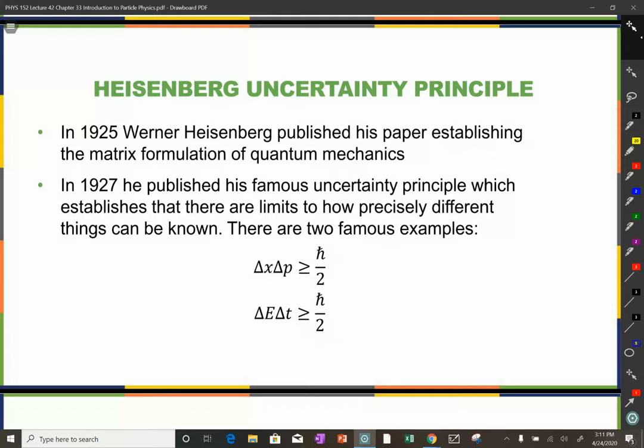In fact, to do particle physics calculations, you have to know a lot of quantum mechanics, and then a lot of other hard math. Werner Heisenberg was one of the two originators of quantum physics. There were two separate formulations: one was the matrix formulation done by Werner Heisenberg, and then there was Schrödinger's wave formulation.